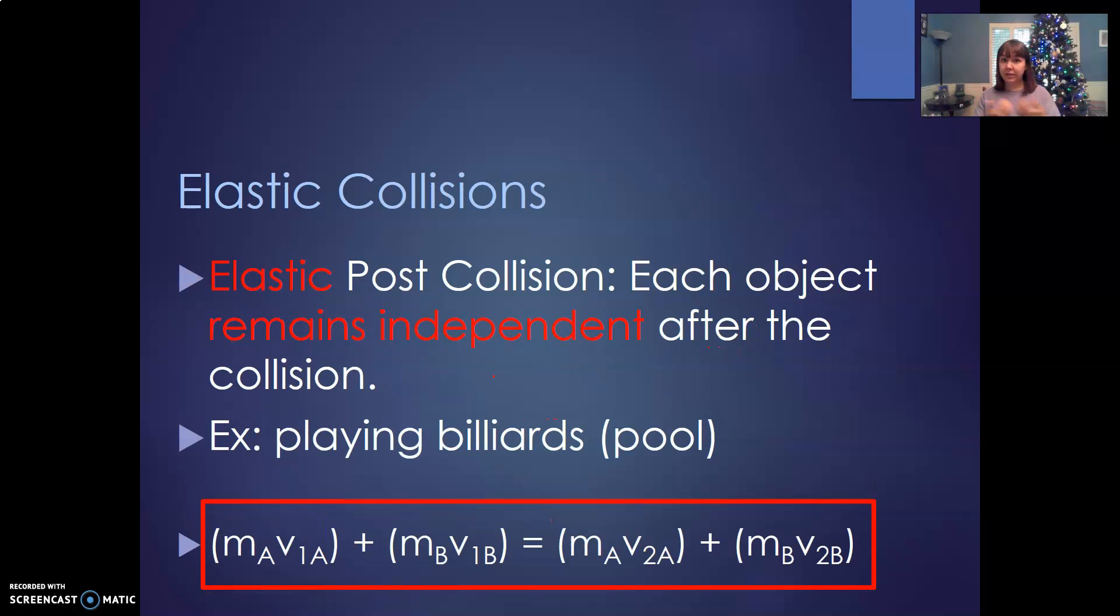When we have these collisions, there's two things that could happen depending on what happens post-collision. With elastic collisions, both of your objects remain independent. So think about playing pool, right? Playing billiards. You've got the eight ball and the cue ball and the six ball and whatever. They run into each other, but then afterwards they're separate. So when you're calculating their momentums, each object remains separate before and after the collision. So here's your cue ball, here's your eight ball. Afterwards, your cue ball has changed its velocity, but it's still an independent object. Your eight ball has changed its velocity, but it's still an independent object. So one will gain, one will lose.